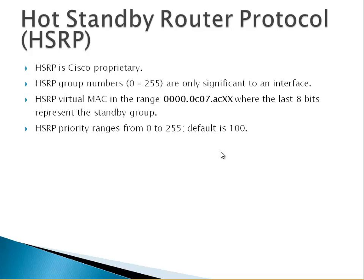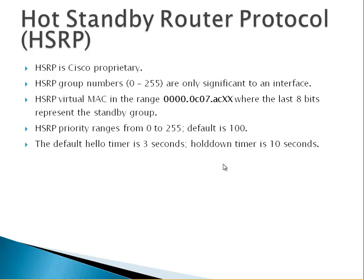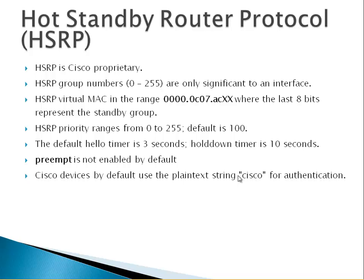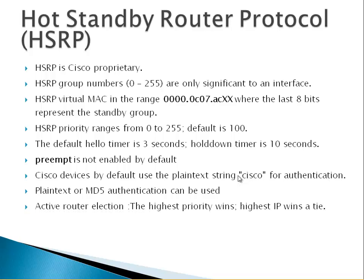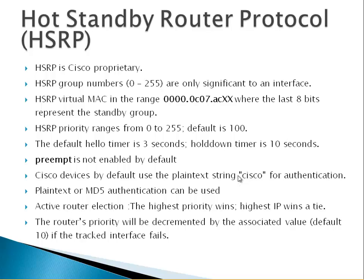HSRP priority ranges from 0 to 255; the default is 100. The default hello timer is 3 seconds and the hold-down timer is 10 seconds. Preempt is not enabled by default. Cisco devices by default use a plain-text string 'cisco' for authentication, but plain-text or MD5 authentication can be used. For active router election, the highest priority wins; the highest IP address wins a tie. If priority is left at the default of 100, the highest IP address wins. The router's priority will be decremented by the associated value (default 10) if the tracked interface fails.